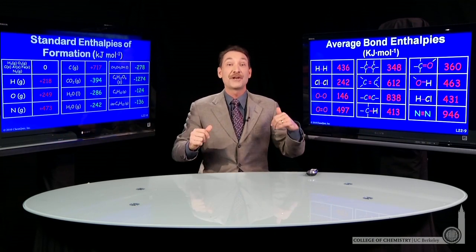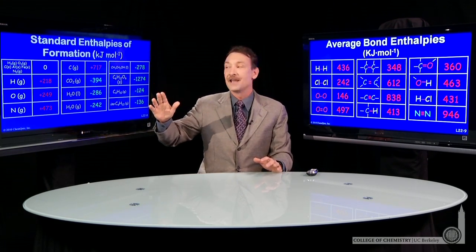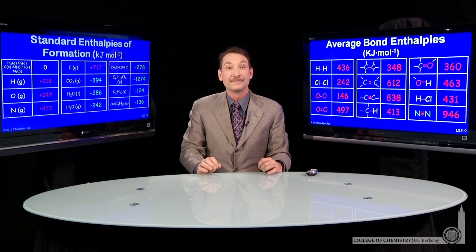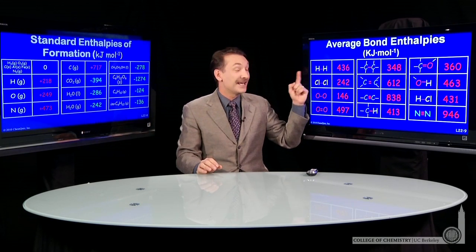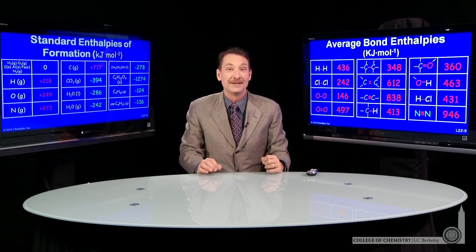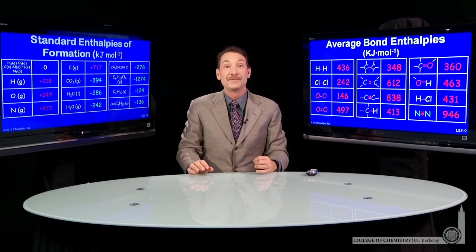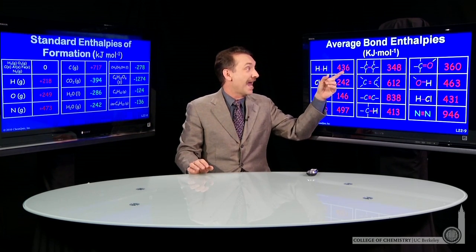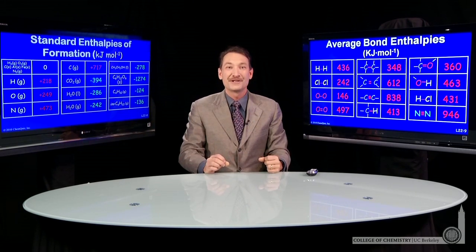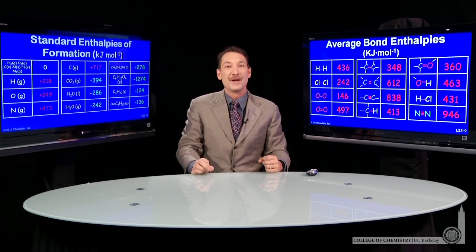Now notice these two tables are related. For example, the standard enthalpy of formation of hydrogen atoms is 218 kilojoules per mole. If you look at breaking the hydrogen-hydrogen bond, that's 436 kilojoules — which makes sense, because that's twice the enthalpy of formation. When you break this bond, you add 436 kilojoules and get two moles of hydrogen atoms, so it's twice the standard enthalpy of formation of hydrogen.